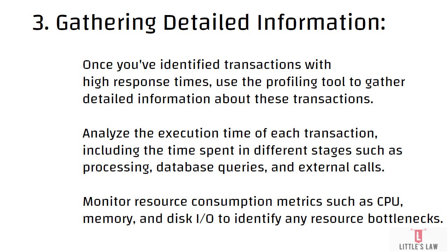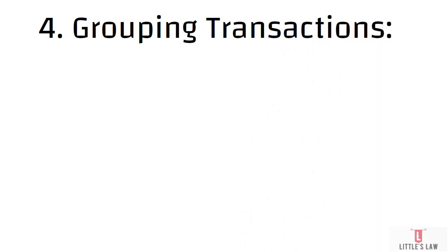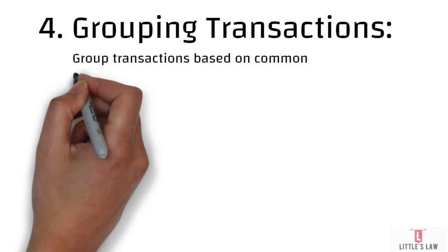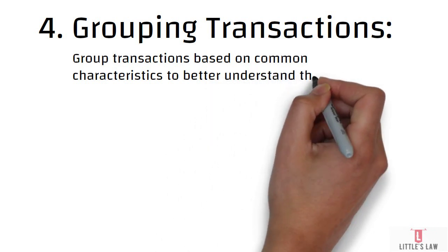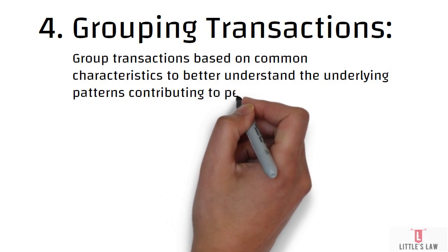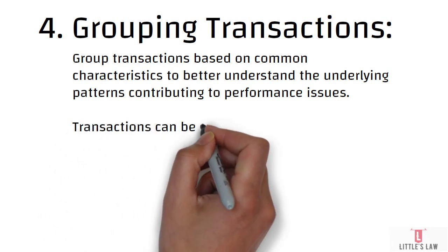We also monitor resource consumption metrics such as CPU, memory, and disk to identify any resource bottlenecks. Finally, the grouping of transactions — that's where we complete the analysis. Grouping is based on common characteristics to better understand the underlying patterns contributing to performance issues. Transactions can be grouped by functionality such as login or checkout, by user interactions such as page views or form submissions, or by system components such as database calls or API calls. By grouping transactions, we can identify trends and patterns which help prioritize optimization efforts, allowing us to systematically analyze results, identify bottlenecks, and take targeted actions to improve overall application performance.